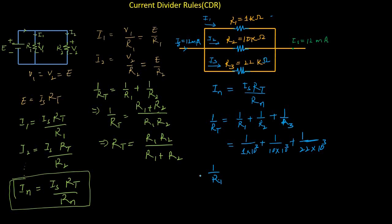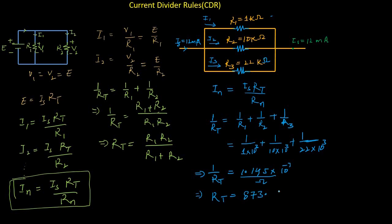Substituting the resistance values — 1 kΩ, 10 kΩ, and 22 kΩ — and using a calculator, 1/Rt equals 1.145 × 10⁻³ per ohm. Therefore, the equivalent resistance Rt equals 873.02 ohms.